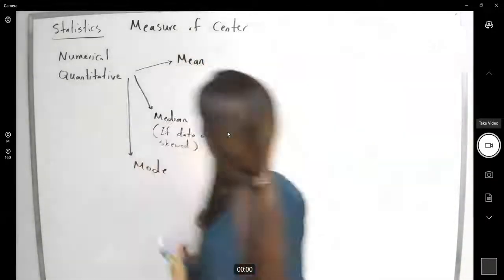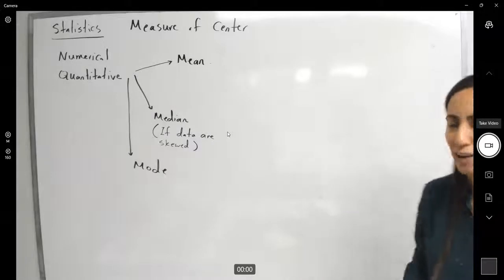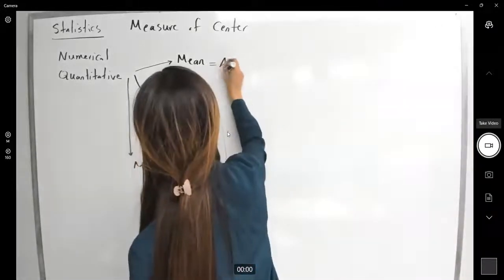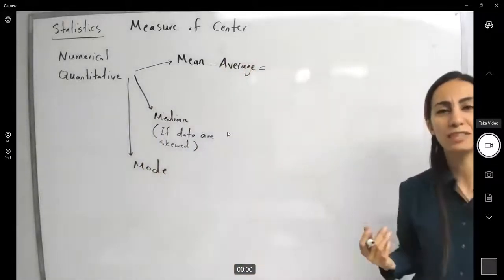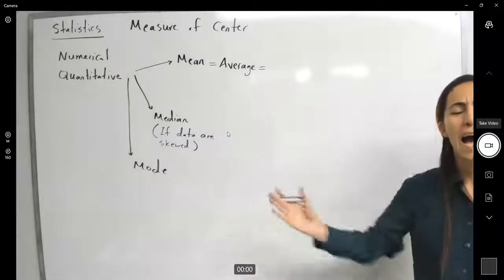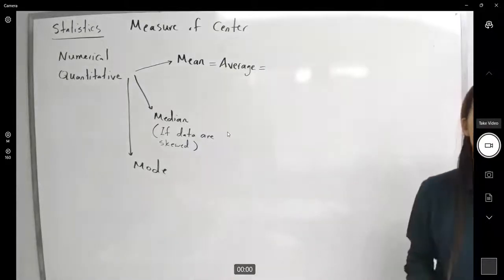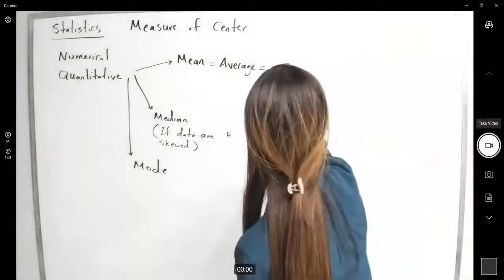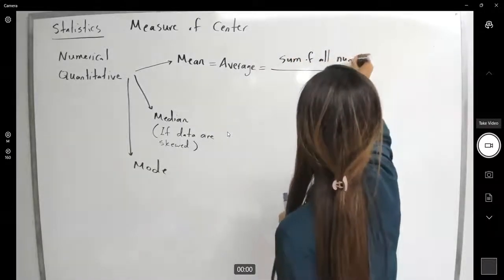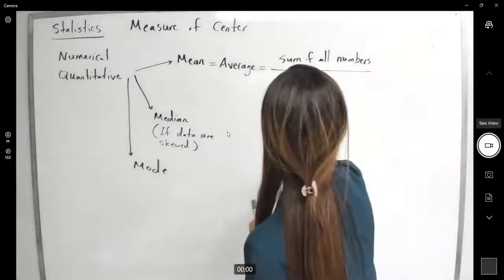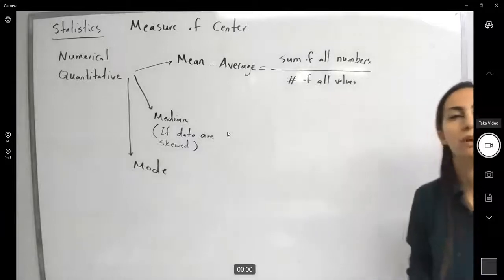So how do we define each one of these? What is the definition of mean? Mean or the average is, you're going to take all of the data, all of the numbers in your collection, add them together and divide by the number of values in your collection. So it is equal to sum of all numbers divided by the number of all values.